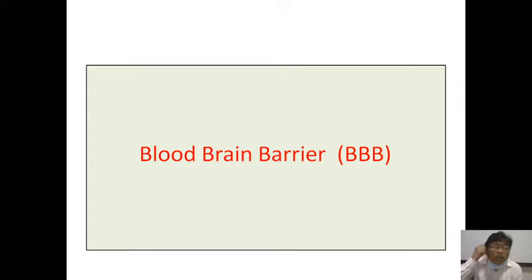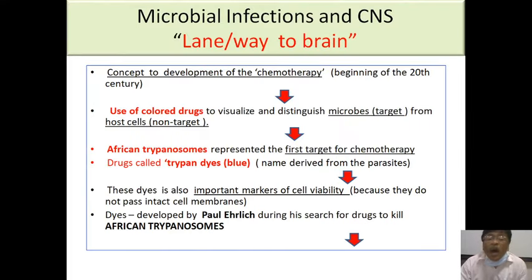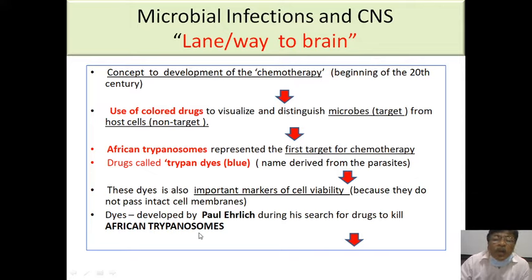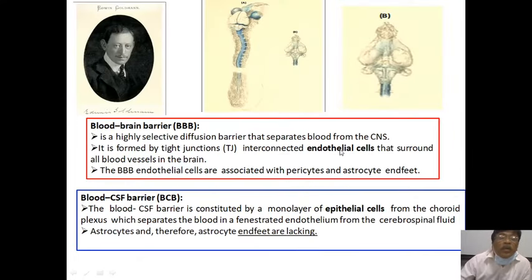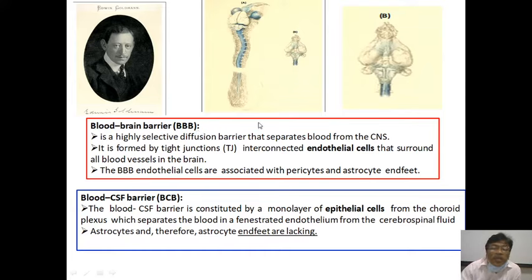How do these pathogens enter? We know from physiology there is a blood-brain barrier. The concept started with a study by Paul Ehrlich when he was looking for treatment for African trypanosomiasis. He used trypan blue dye and observed that some tissues were getting colored and some were not, giving the concept that some kind of barrier exists between blood and brain — he named it the blood-brain barrier.